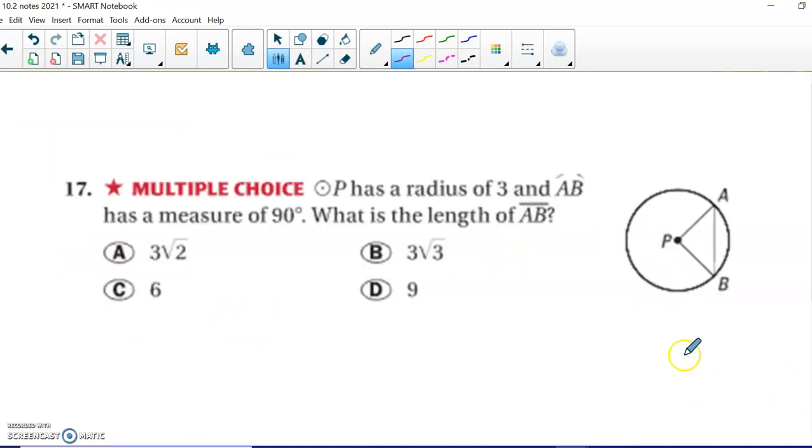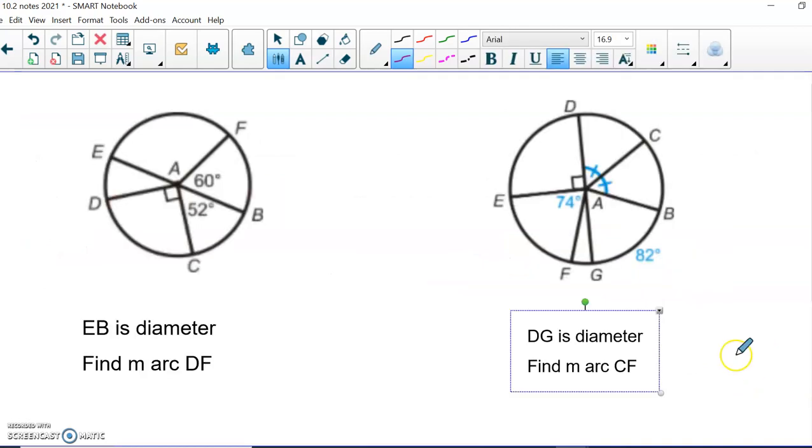All right, let's try a couple more. Skip this for now. Okay, here we go. Again, they're telling us EB is the diameter. So we can assume that's 180. So I'm going to take 180 minus 60. That's going to tell us that this piece is 20 degrees. So they're asking us to find the measure of arc DF. We know it's a minor arc because it's only two letters. So I start at D and I go to F, the short way, not the long way.